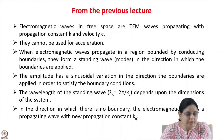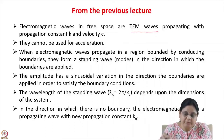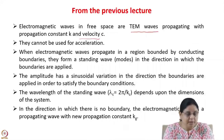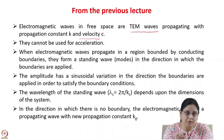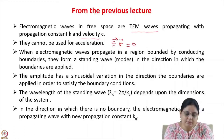We saw that electromagnetic waves in free space are TEM waves — the electric field and magnetic field are perpendicular to each other and perpendicular to the direction of propagation. They propagate with propagation constant k and velocity c. Since E dot V equals 0, there is no acceleration using electromagnetic waves in free space.